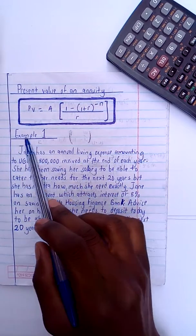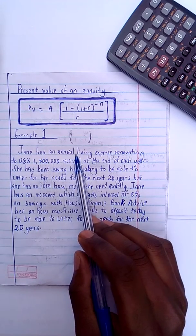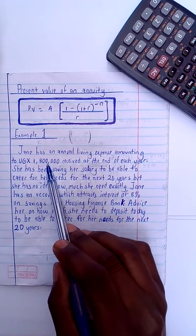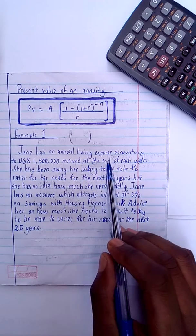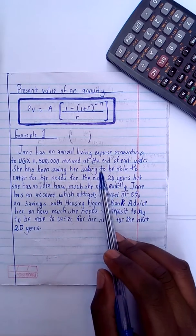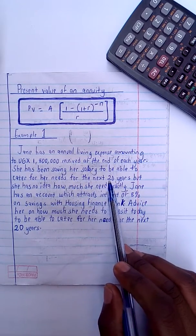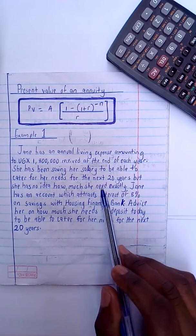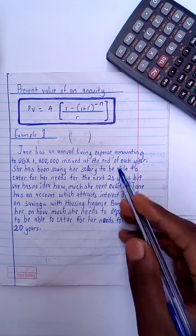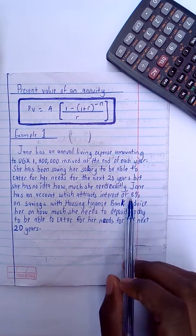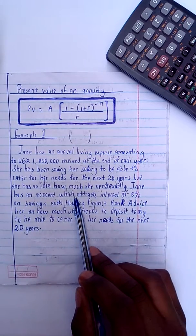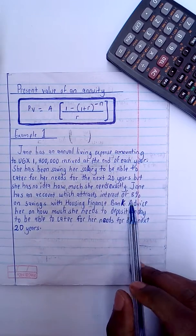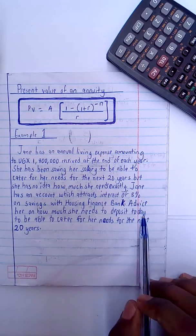Example one: Jenna has an annual living expense amounting to UGX 1,800,000 received at the end of each year. She has been saving her salary to be able to cater for her needs for the next 20 years, but she has no idea how much she needs exactly. Jane has an account which attracts interest rate of 8% on savings with Housing Finance Bank. Advise on how much she needs to deposit today to be able to cater for her needs for the next 20 years.